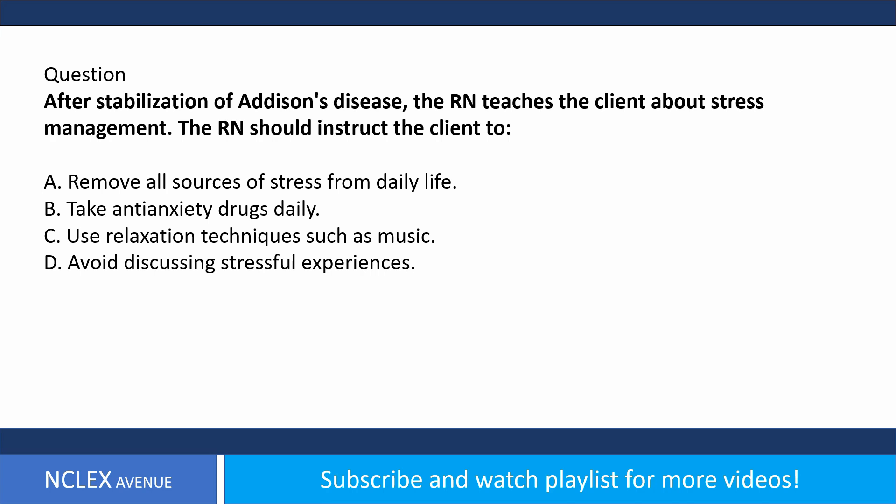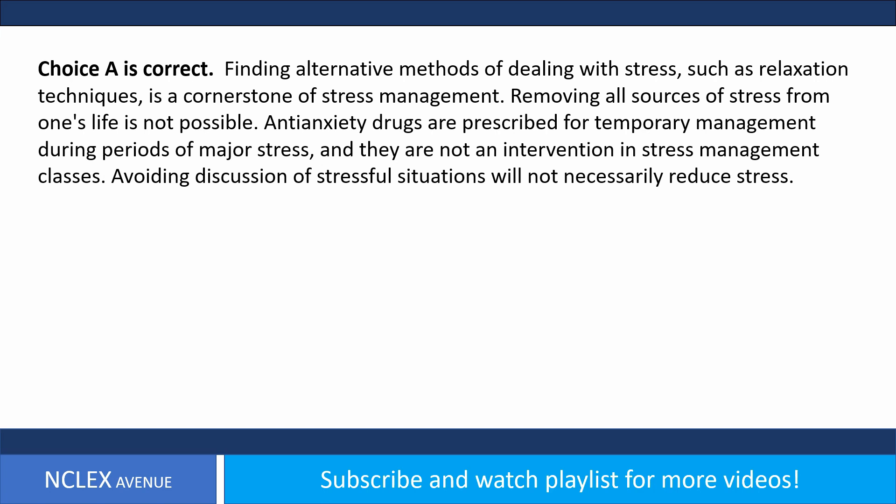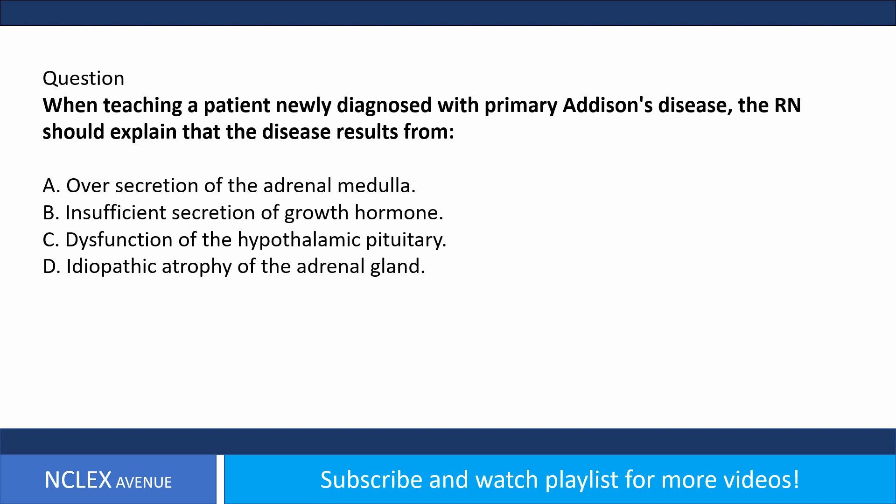Question: After stabilization of Addison's disease, the RN teaches the client about stress management. The RN should instruct the client to: A) remove all sources of stress, B) take anti-anxiety drugs daily, C) use relaxation techniques such as music, D) avoid discussing stressful experiences. Answer choice C is correct. Finding alternative methods such as relaxation techniques is a cornerstone of stress management. Removing all sources of stress is not possible. Anti-anxiety drugs are for temporary management, not a stress management intervention. Avoiding discussion of stress does not necessarily reduce it.